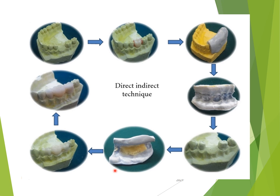In a variation of this technique, after obtaining the putty index of the prepared teeth, you can load the temporary material and directly place it in the patient's mouth. Then remove the provisional restoration, trim it, apply luting cement, and place it back in the patient's mouth.